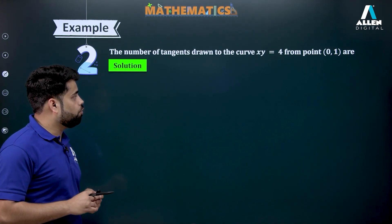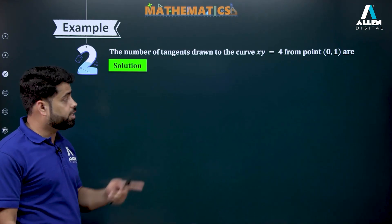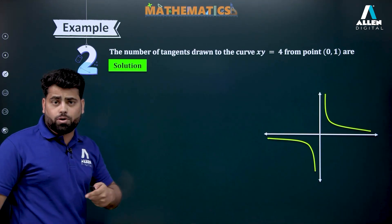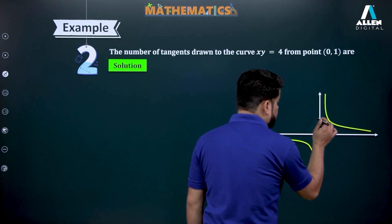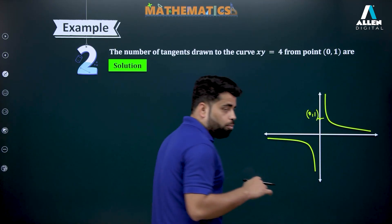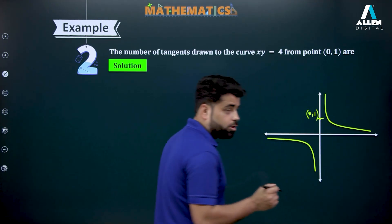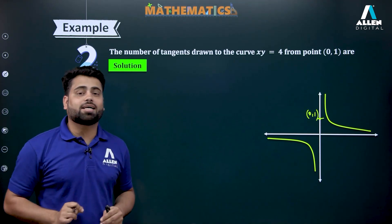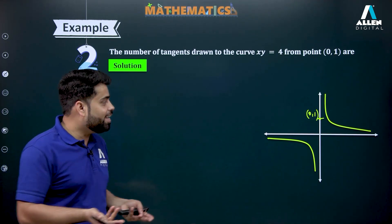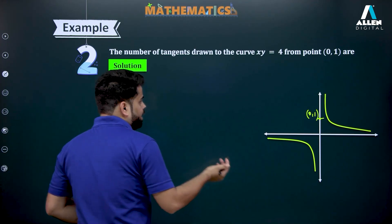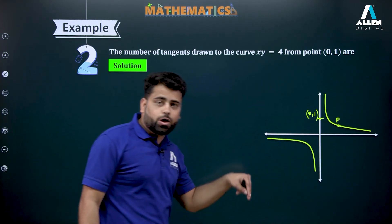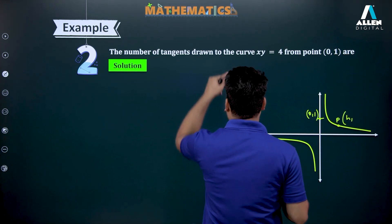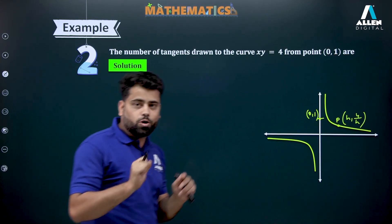Question: find the number of tangents drawn to the curve xy = 4 from the point (0, 1). We are familiar with this curve — it's a rectangular hyperbola, xy = 4 — and somewhere here your point (0, 1) is. You might feel you can draw one tangent this way and one that way, but control your instincts — mathematically we prove and then accept the answer. Let me assume a point on the curve as (h, 4/h).